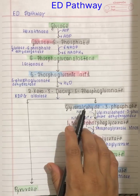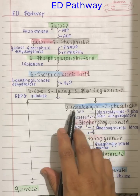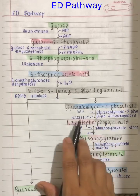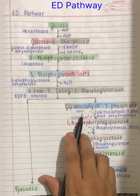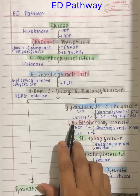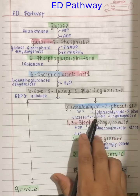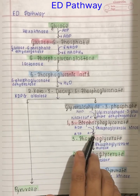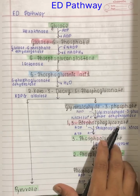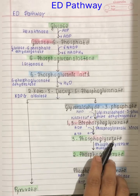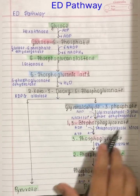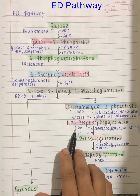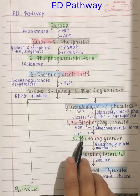The next step is oxidative phosphorylation, where glyceraldehyde-3-phosphate is converted into 1,3-bisphosphoglycerate. This is oxidized by the coenzyme NAD, which is reduced to NADH + H⁺, with the help of glyceraldehyde-3-phosphate dehydrogenase. After that, 1,3-bisphosphoglycerate is converted into 3-phosphoglycerate by phosphoglycerate kinase. Here, a phosphate group is lost and transferred to ADP, resulting in the formation of ATP.